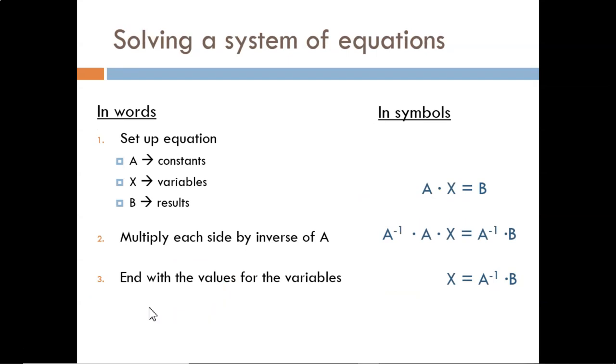Here we see an overview of how a system of equations can be solved. First, we must have an organized system of linear equations. What do we mean by linear? All of the variables included must be raised to the power of 1. From that system we create three arrays, with arbitrary names A, X, and B.